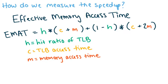So how do we measure this speedup? We can calculate the effective memory access time, and it's calculated like this. We have H representing the hit ratio, C representing the TLB access time, and M representing the memory access time.